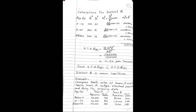Next example: compare death rates of Town A and B, taking Town A as the standard population. For Town A, age group below 10: population is 30,000 and number of deaths are 720. For age group 10 to 40: population is 40,000, number of deaths are 800. For age group above 40: the population is 20,000 and total number of deaths are 560.